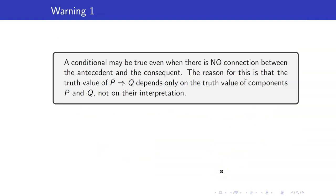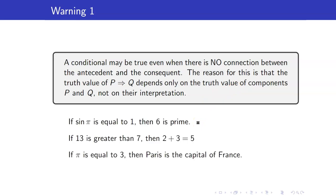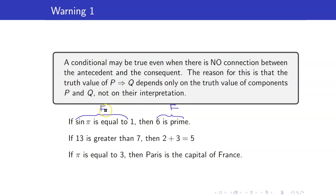Take note that a conditional may be true even when there is no connection between the antecedent and the consequent — the premise and the conclusion. The reason for this is that the truth value of P then Q depends only on the truth values of the components, not on their interpretation. For example, if sin π is equal to 1, then 6 is prime. Sin π equals 0, so that is false. 6 is prime is also false. We have false, false, so therefore the implication is true.